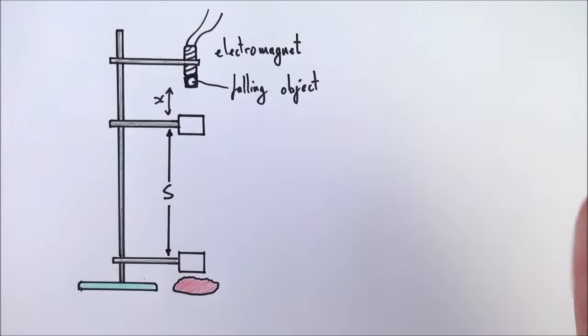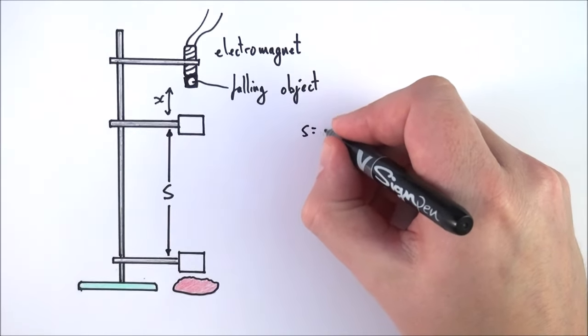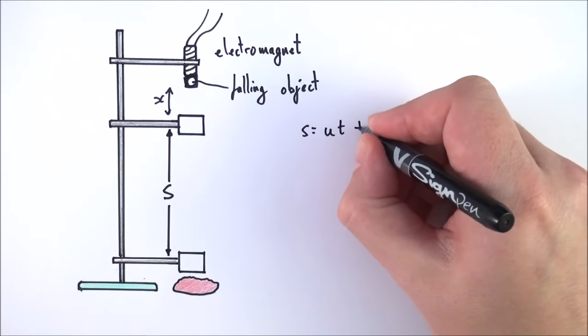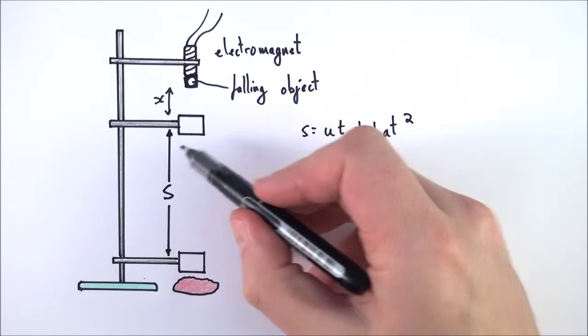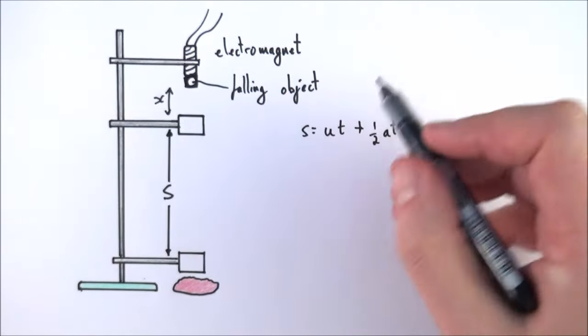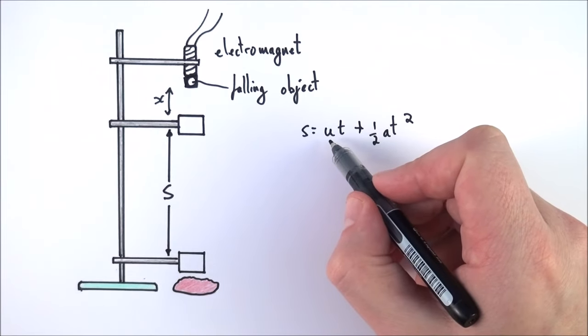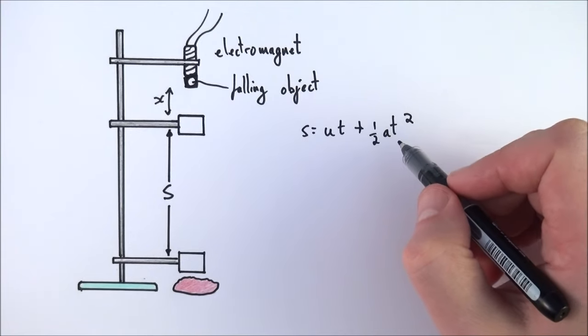In terms of the theory, we can think about our SUVAT equations. We can say that s is equal to ut plus a half at squared, where effectively s is just this distance here. By the time this object meets the top light gate, it's traveling at velocity u, its initial velocity. We can measure the time between the light gates and use that to find the acceleration.